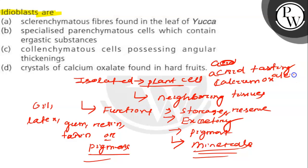This is also known as carbonate or silica. So this is a specialized parenchymatous cell which contains ergastic substances. So option B is correct. For this question, I hope you understood it. Best of luck.